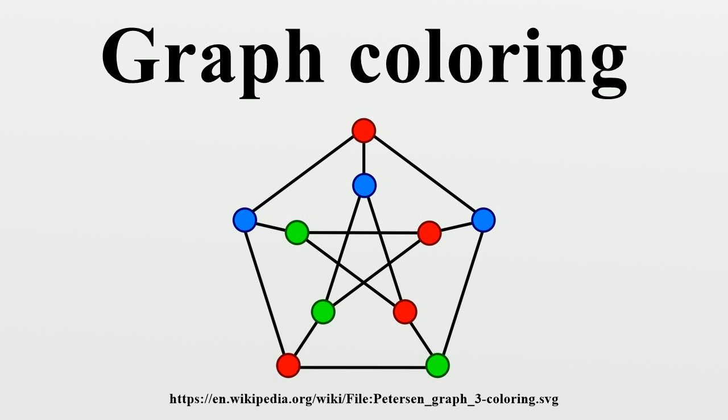Since a vertex with a loop could never be properly colored, it is understood that graphs in this context are loopless. The terminology of using colors for vertex labels goes back to map coloring. Labels like red and blue are only used when the number of colors is small,